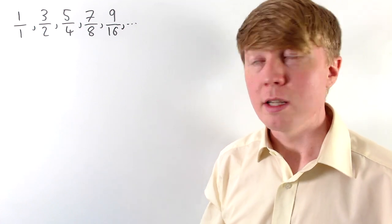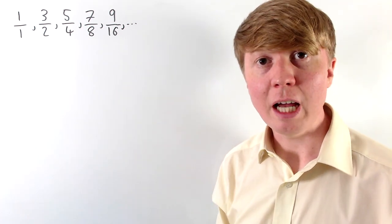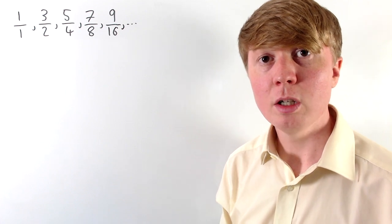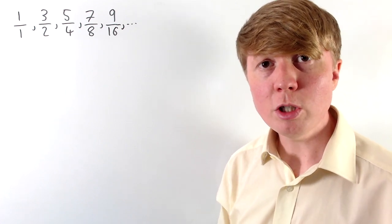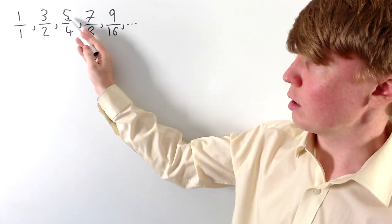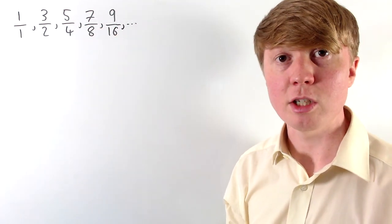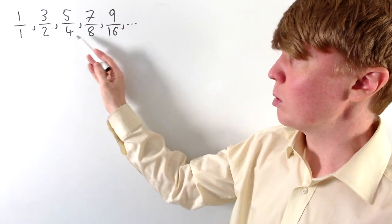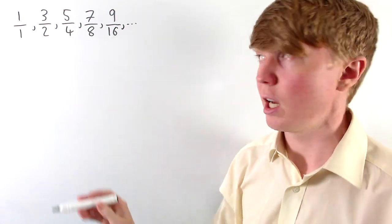We're going to look at sequences like this one, and how to find the partial sum and then the infinite sum of such a sequence. What's special about this sequence? Well, looking at the numerator it seems to be adding the same amount each time, whereas the denominator seems to be multiplying by the same amount each time.